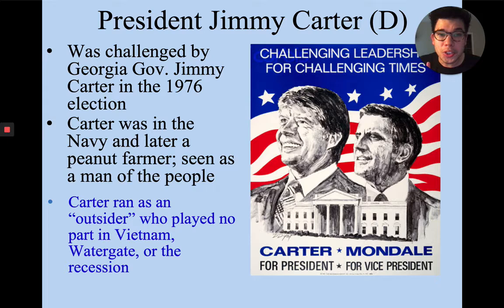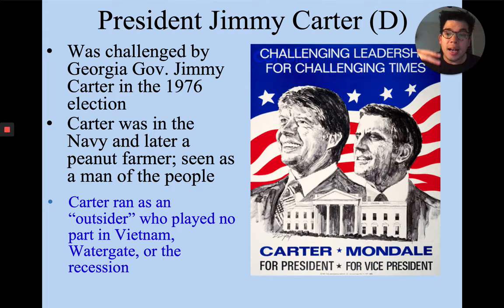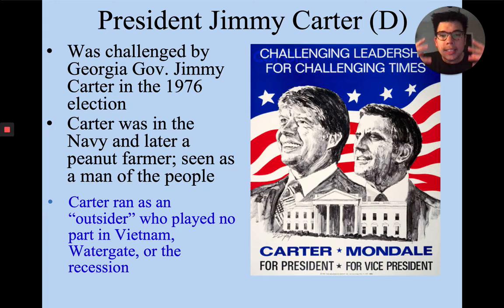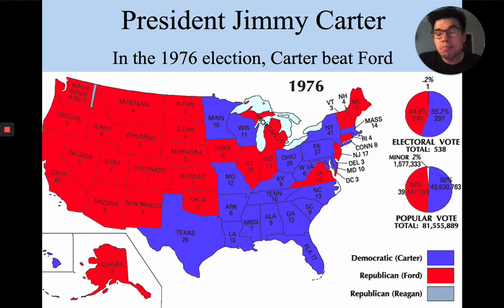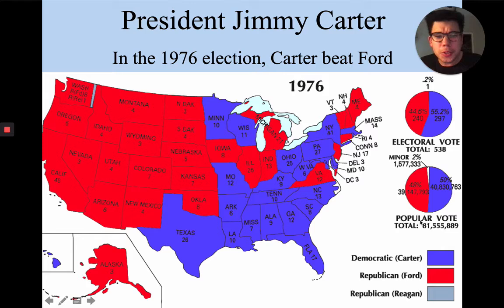This opens Ford up to be challenged by a Democrat named Jimmy Carter. President Jimmy Carter was originally the governor of Georgia, previously in the Navy, and after leaving the Navy he was a peanut farmer. He's seen as a man of the people. His platform is that he's an outsider — he didn't have anything to do with Vietnam or Watergate, hadn't been corrupted by Washington politics, had nothing to do with causing the recession. He wins the 1976 election, not by a ton — it's pretty close electorally and in the popular vote — but Carter wins the presidency.